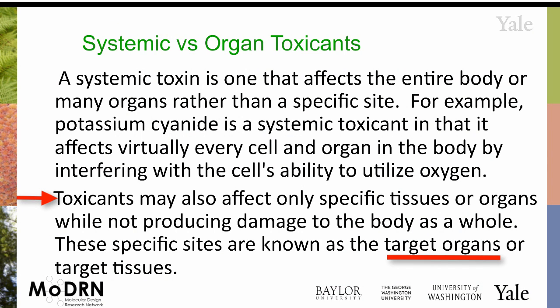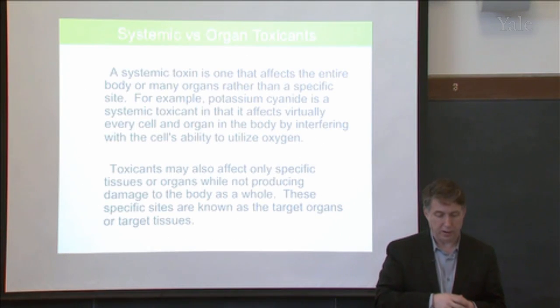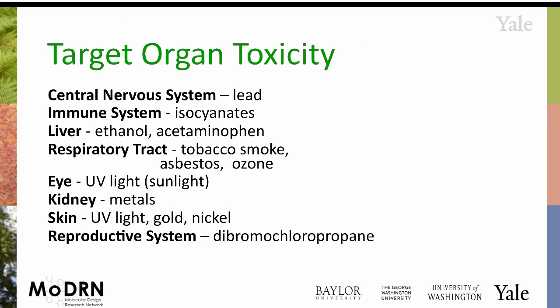Target-specific toxicants, as it would suggest, go after a particular organ or tissue. For instance, when we think about the central nervous system, lead is a particular agent for central nervous system development. Mercury can be a central nervous system toxicant. Classes of chemicals such as isocyanates may affect the immune system. Ethanol and acetaminophen affect the liver. Tobacco smoke, asbestos, and ozone can all affect the respiratory tract. UV light can affect the eyes. Various metals can affect the kidney. And dibromochloropropane affects the reproductive system.